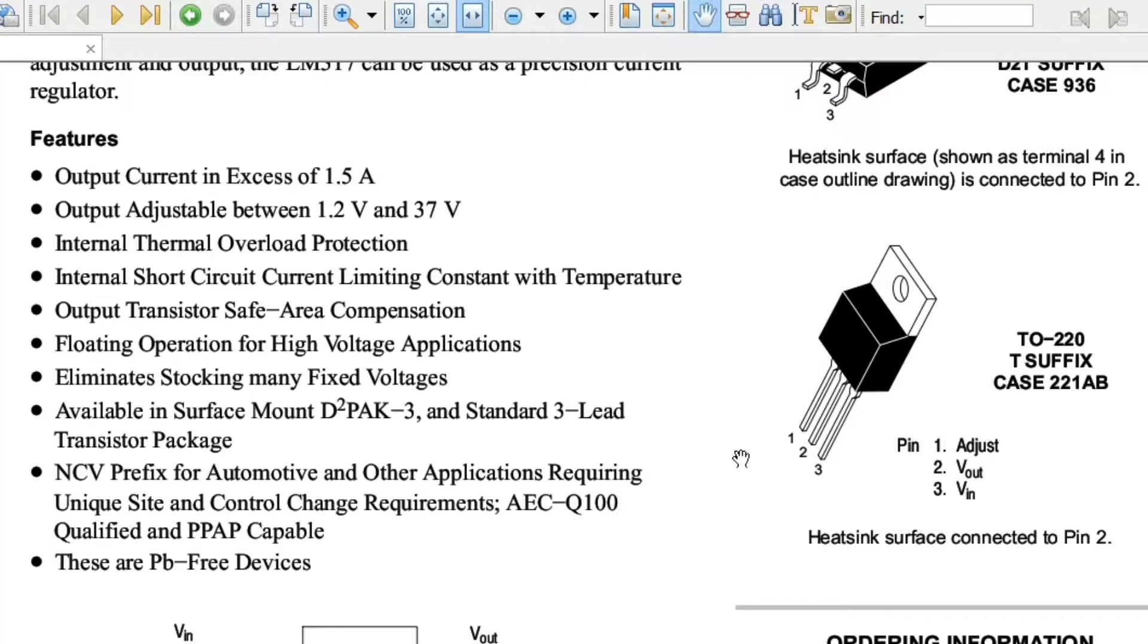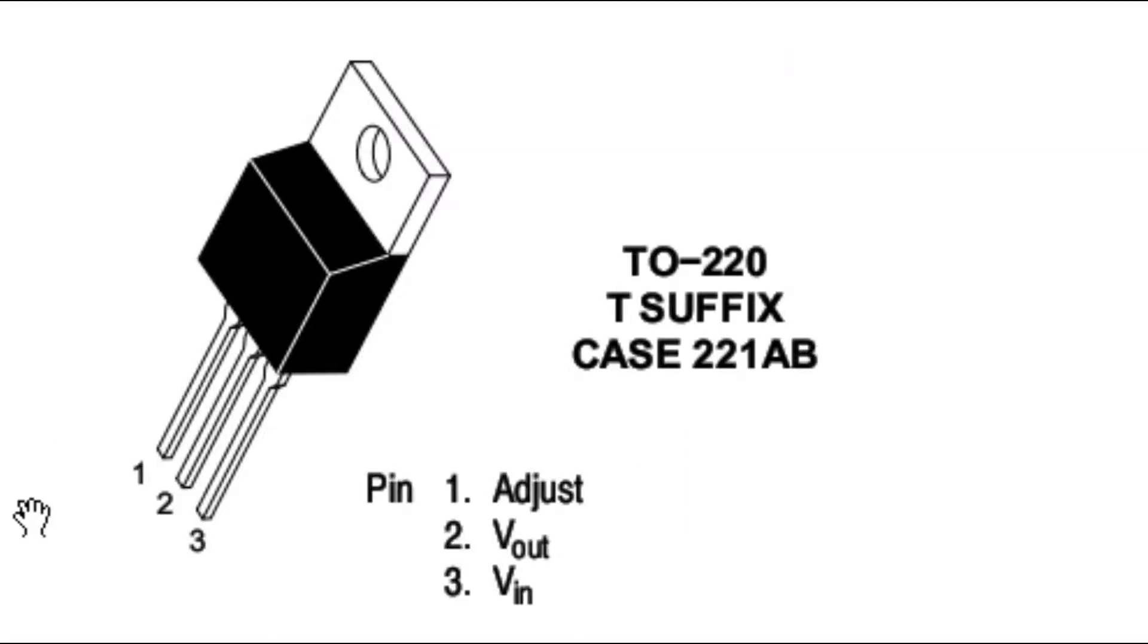We can set the output voltage to desired level with a corresponding input voltage being anywhere between 3 and 40 volts. If we look at the pinouts of the LM317 voltage regulator, pin number one is the adjust, pin number two is the output, and pin number three is the input.